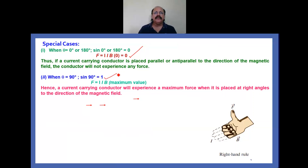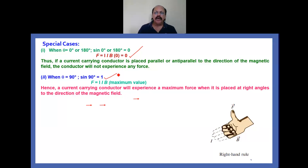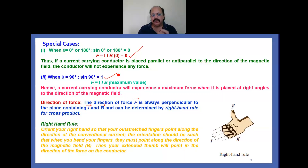If θ = 90°, sin 90° = 1. Applying the formula F = ILB sin 90° = ILB, which is the maximum value. A current carrying conductor will experience maximum force when it is placed at right angles to the direction of magnetic field. Now, how is the direction of the force determined? The direction of the force is perpendicular to the plane containing L vector and B vector, and can be determined by the right-hand rule for cross product.